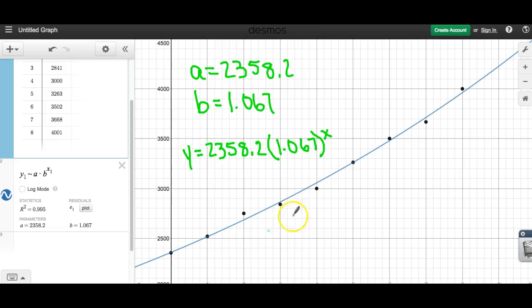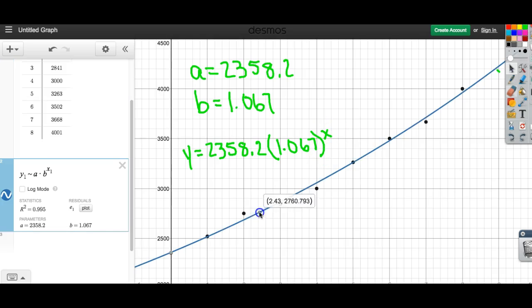That's what models our data here. That means we have a starting value of about 2,358 and we're growing at about 6.7%. Of course, you can trace along here and get any estimate you want.